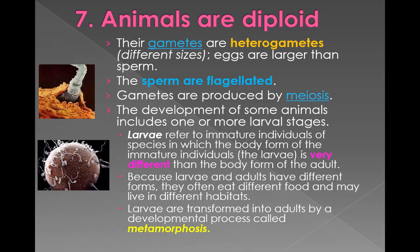The seventh characteristic is they are diploid. Their gametes are heterogametes, meaning they're different sizes. Eggs are much larger than sperm, and their sperm are flagellated — they have flagella, the little tail we often see on sperm. Gametes are produced by meiosis.